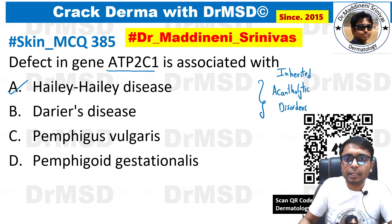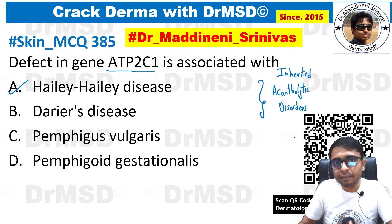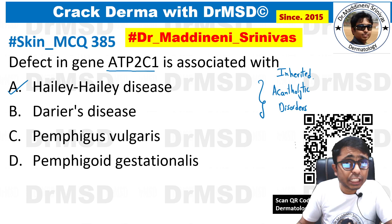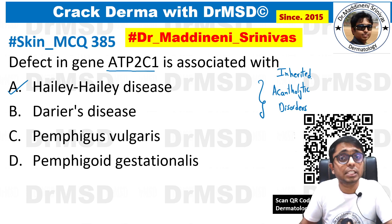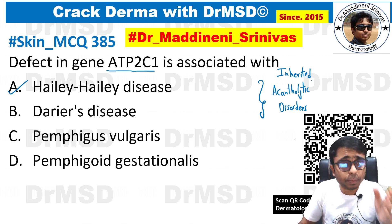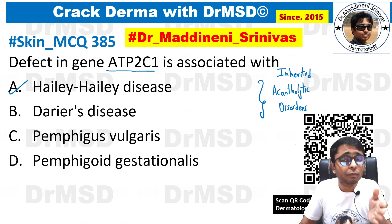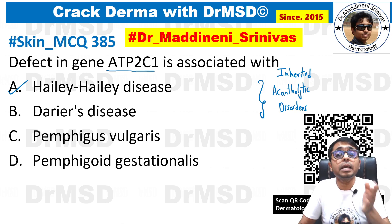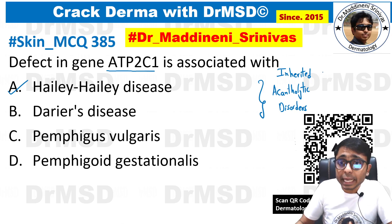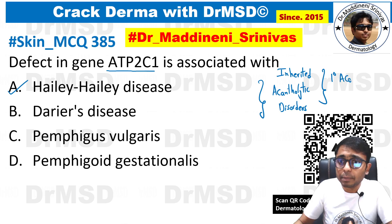The basic defect here is going to be with calcium transportation. Calcium transportation will be defective, because of which there is going to be primary acantholysis. So both of these are examples of primary acantholysis.